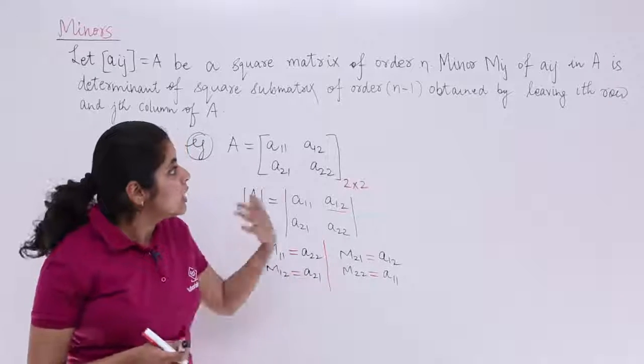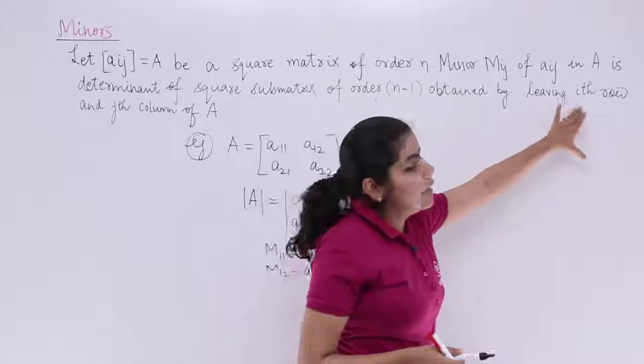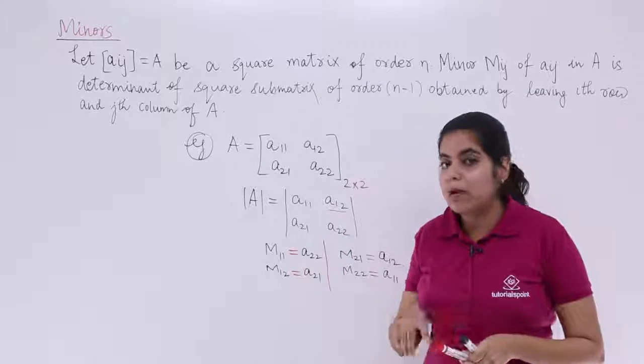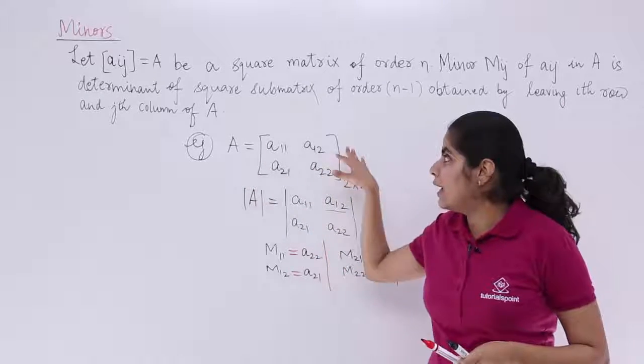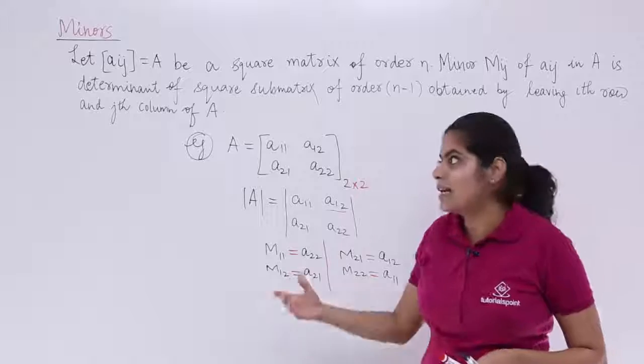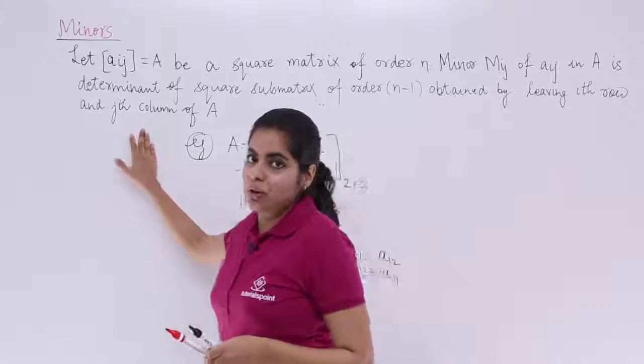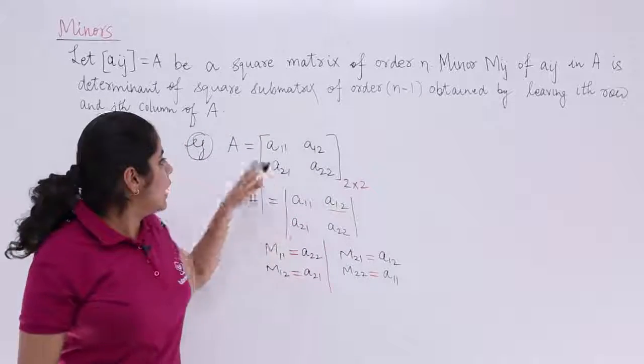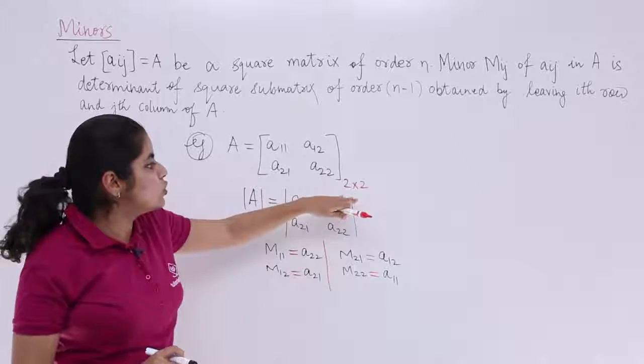Obtained by leaving the ith row, you left the row, you remember? You left the corresponding row and you left the corresponding column. So that is written ith row and jth column. Now let's move to the higher order matrix. 2x2 is taken.